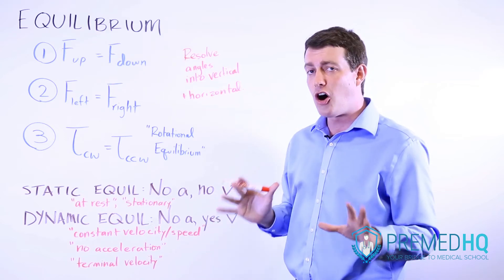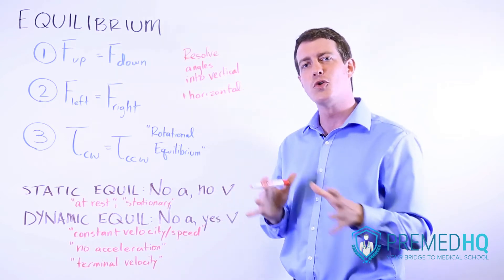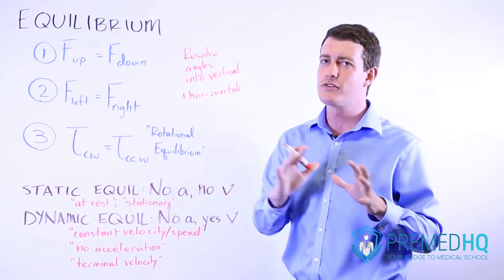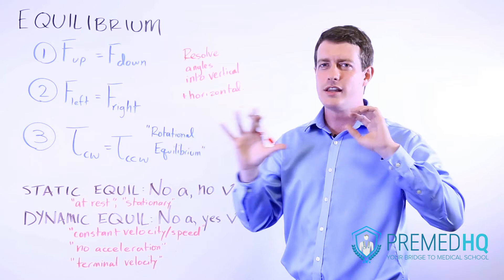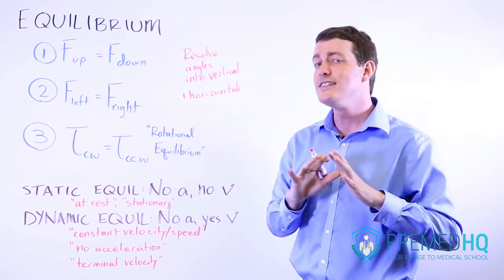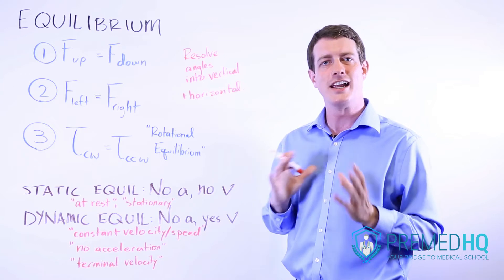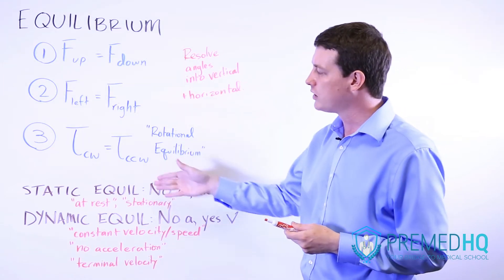Now equilibrium itself, all it says is that there is no net force on an object. And so remember that F equals ma, so if there's no force, therefore there will be no acceleration. That doesn't necessarily mean that the object is completely stationary and not moving. And that gets us into the types of equilibrium.